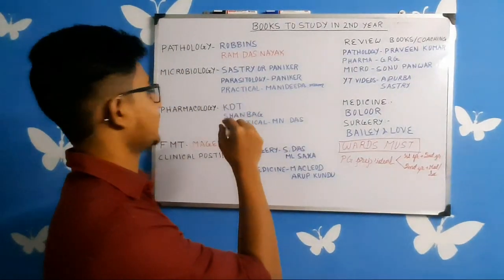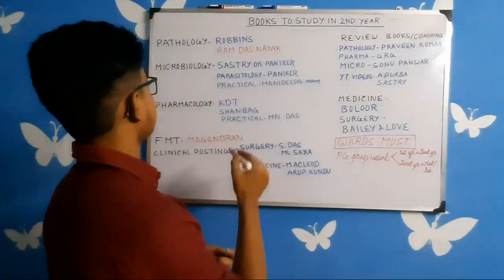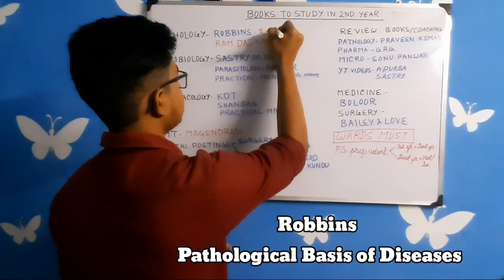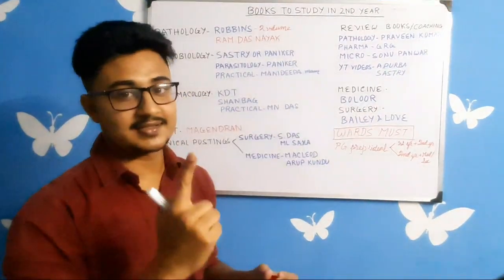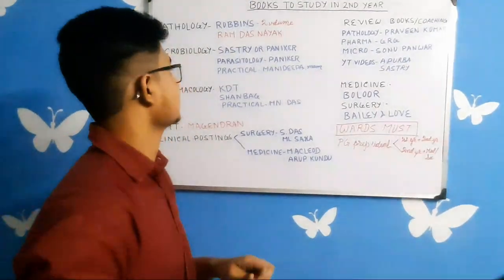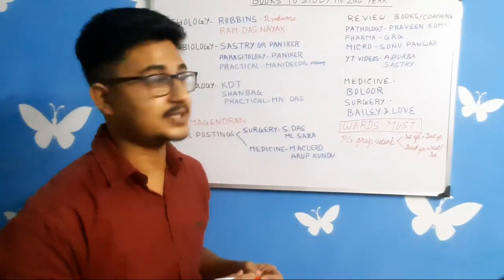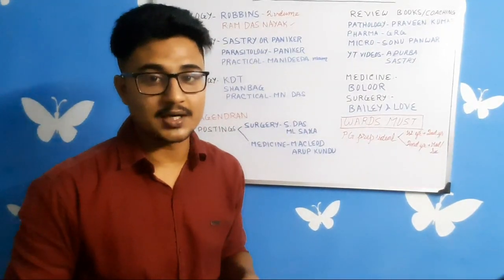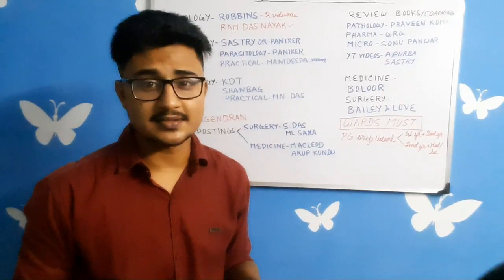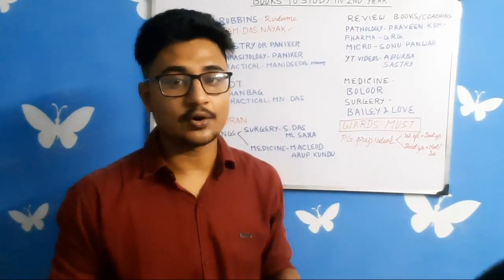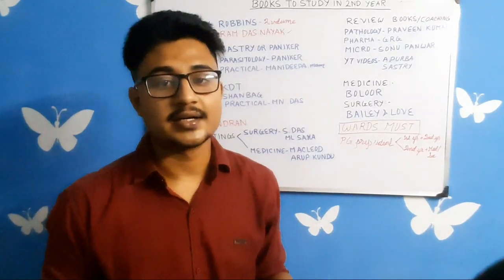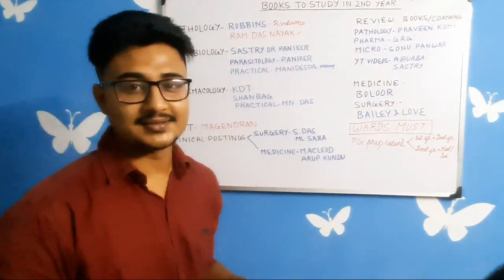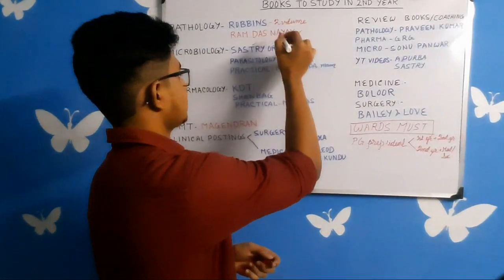First, coming to the books of second year: in pathology you should buy Robbins — the two-volume book, that is the Pathological Basis of Diseases, not the single book. If you are not able to read Robbins, you can follow Ramdas Naik. Even if you are following Robbins, you should keep Ramdas Naik for exam perspective, as Robbins is very vast. You need not buy Harsh Mohan — that's not much necessary.